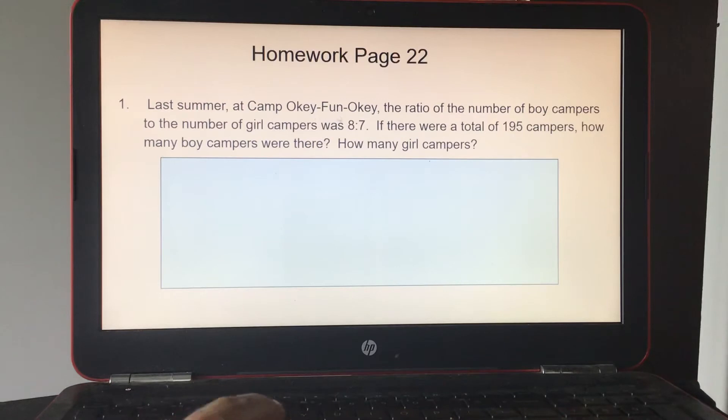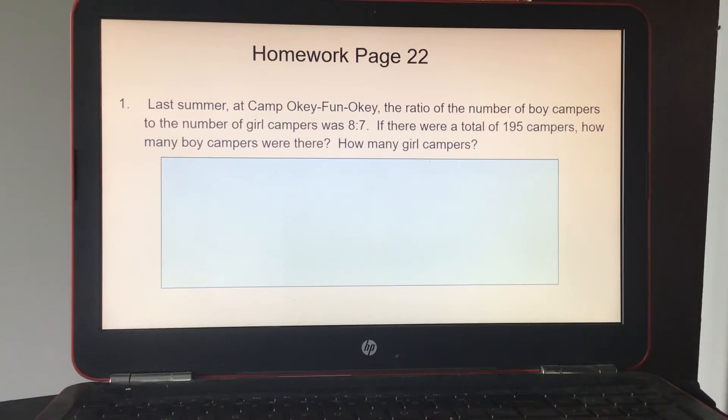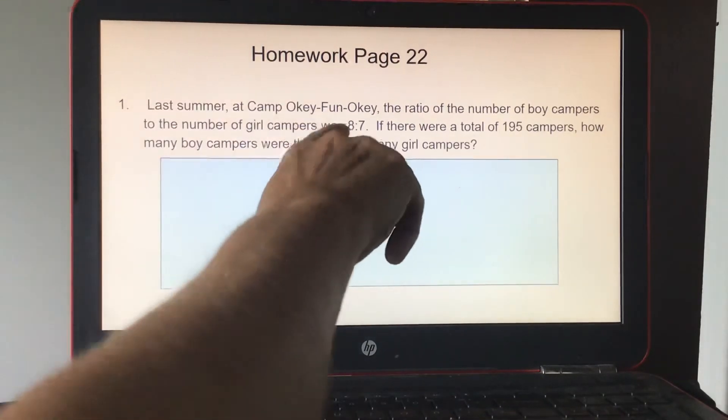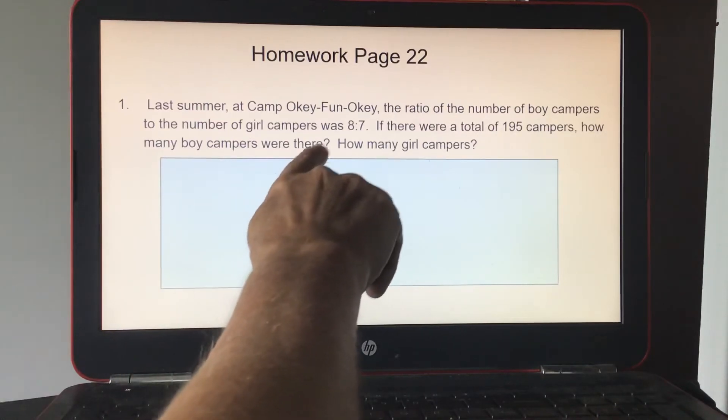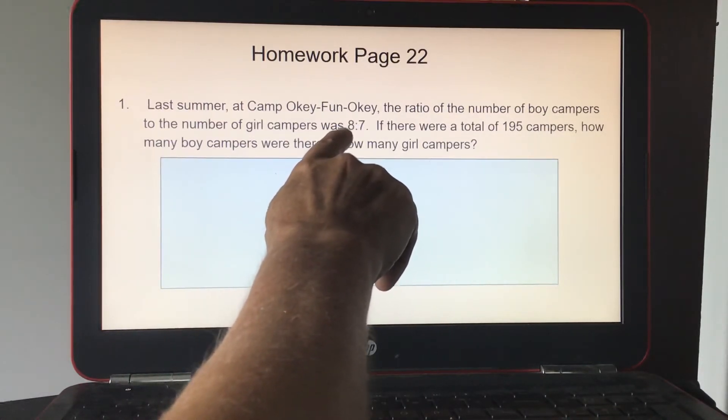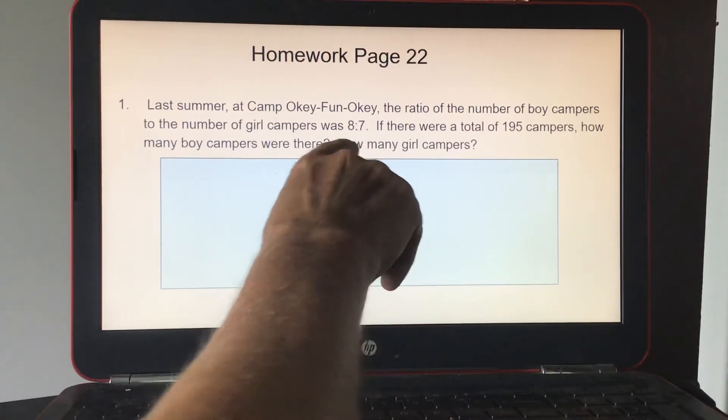Okay, so number one, last summer at Camp Oakey Fun Oakey, the ratio of the number of boy campers to the number of girl campers was 8 to 7. If there were a total of 195 campers, how many boy campers were there and how many girl campers? So I'll give you a hint on what to do. I would add these two totals together. So 8 plus 7 is 15. And I'm going to divide 195 by 15, which should be 13. And then each one of your boxes for your tape diagram would be worth 13. So in other words, if you wanted to find out the boy campers, you would multiply 8 times 13. And the girl campers, you would multiply 7 times 13.